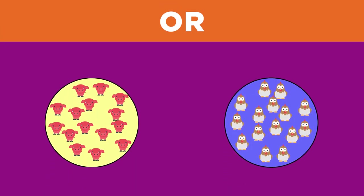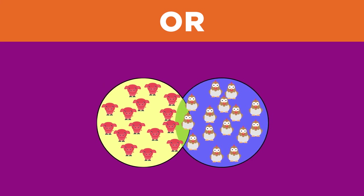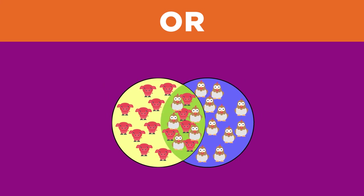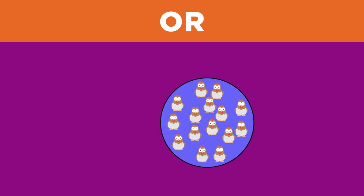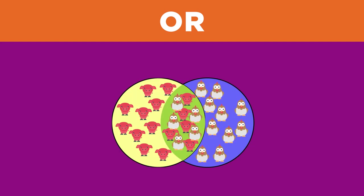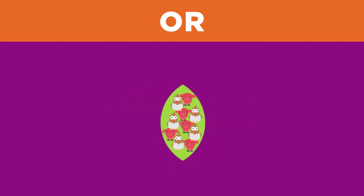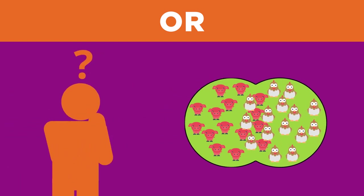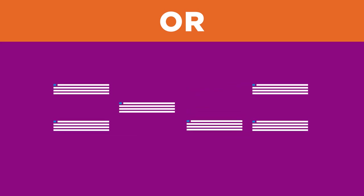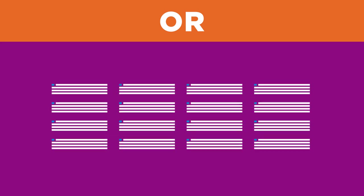The next Boolean operator is OR. Here's how it works. Using OR between two keywords tells the computer to include results that have one keyword, or the other keyword, or both. So how does using OR help you when you're doing a search? It broadens your search to get more results. OR gives you more.